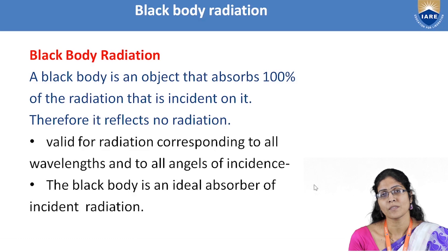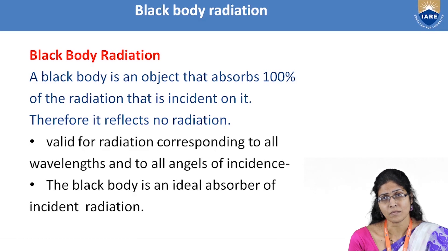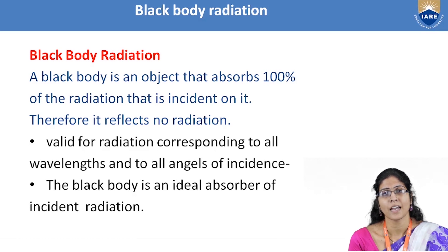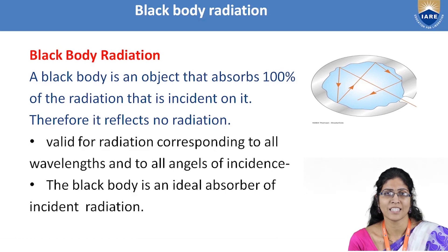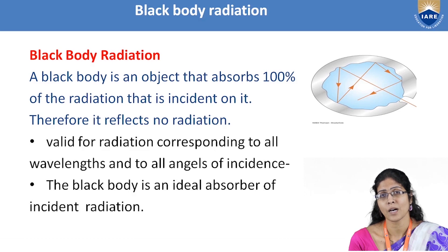Before knowing about black body radiation, let us know what a black body is. It is an object that, when light is incident on it, absorbs 100% of the radiation and allows no reflection. This is valid for radiation corresponding to all wavelengths at all angles of incidence. If you want to understand this pictorially, you can take a hollow cavity with a hole which allows radiation to enter through it — this hole acts as a complete absorber. Whether radiation comes out depends on the temperature of the body. Thus the black body is an ideal absorber of incident radiation.